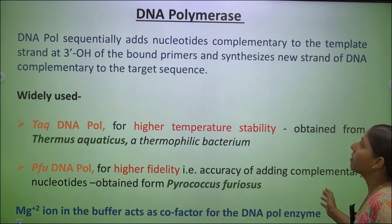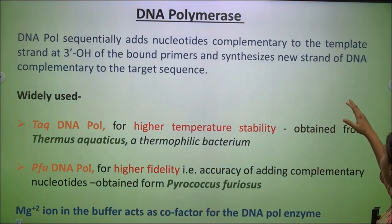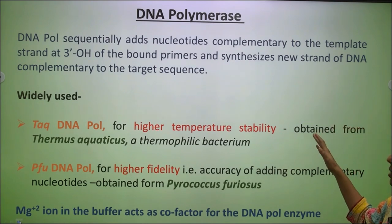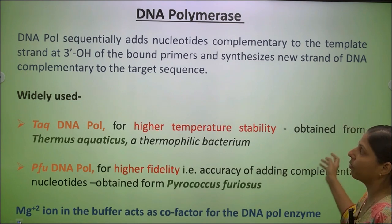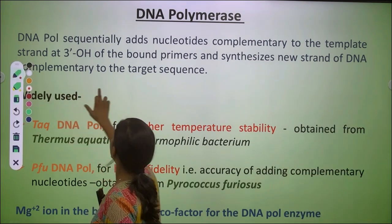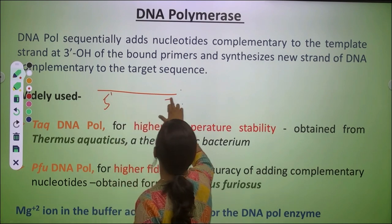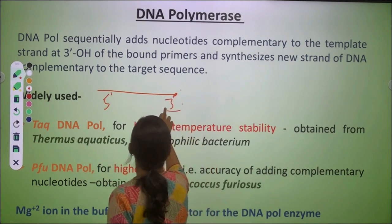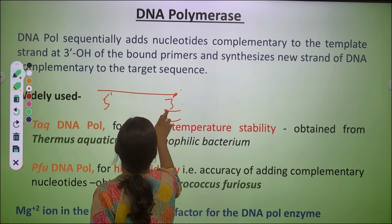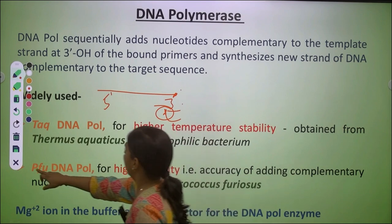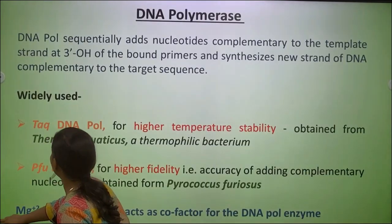DNA polymerase adds nucleotides sequentially, complementary to the template strand at the 3 prime end of the bound primers, and synthesizes a new strand of DNA complementary to the target. Here the template strand has a 5 prime and a 3 prime end. Nucleotides are added at the 3 prime OH of the primer for synthesis. For this, we use DNA polymerases known for high temperature stability.